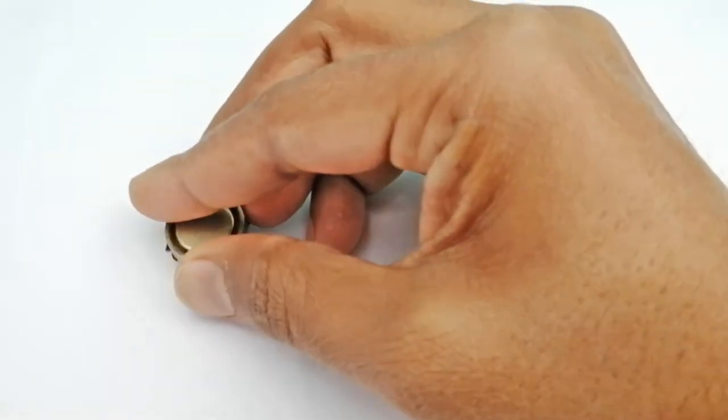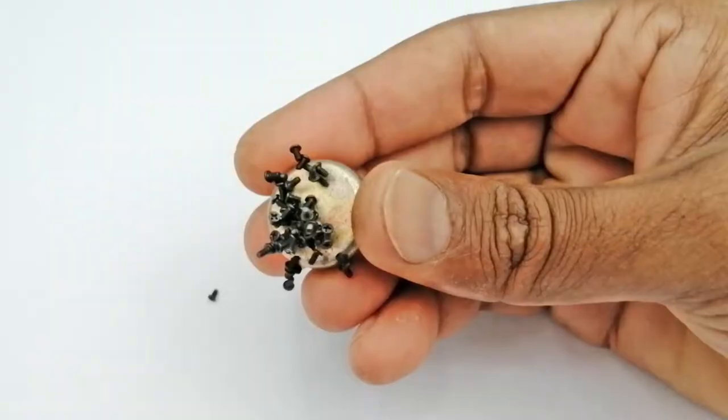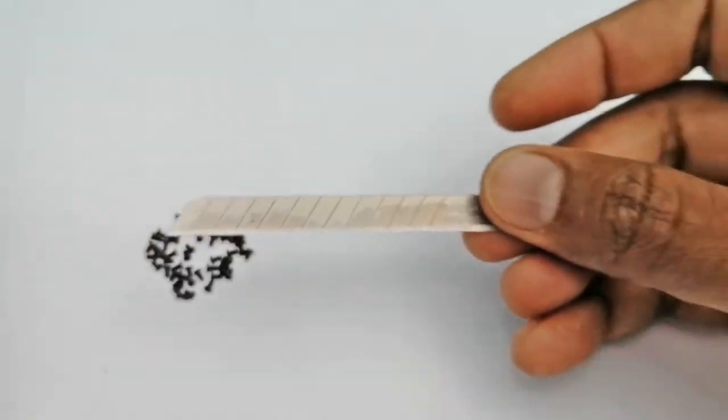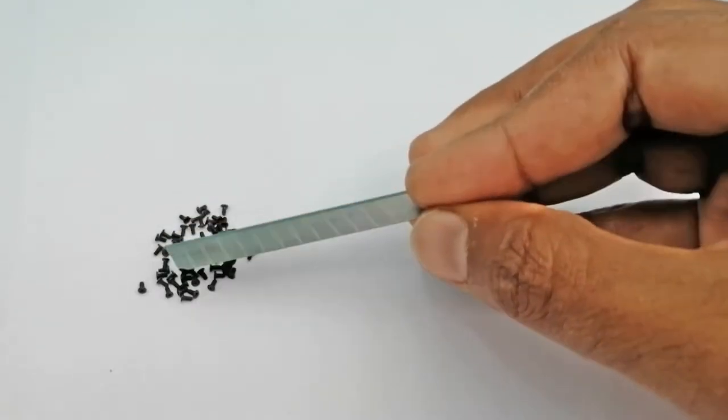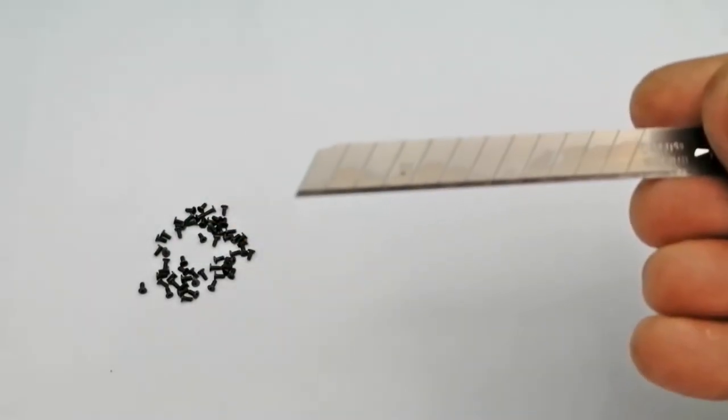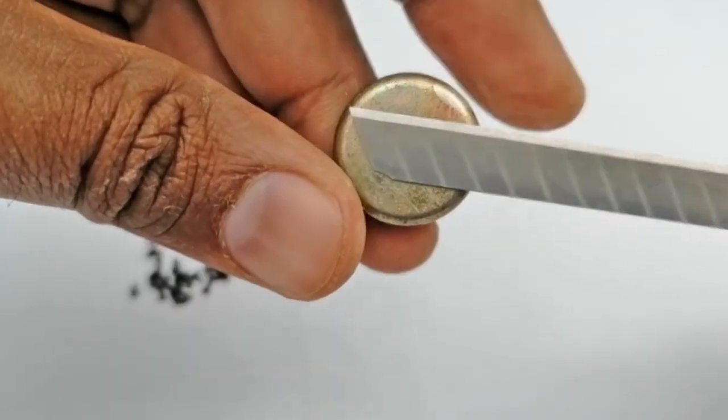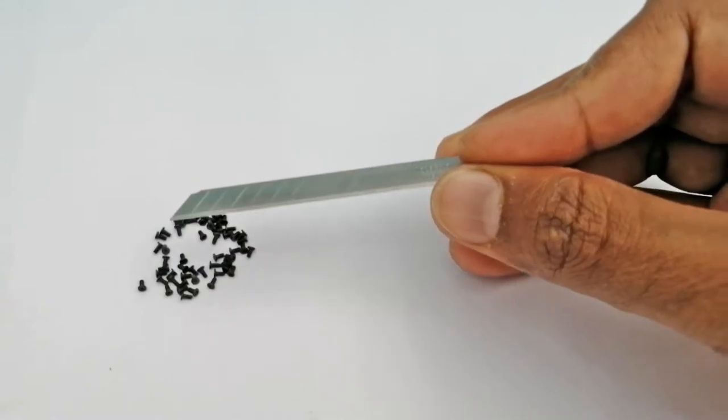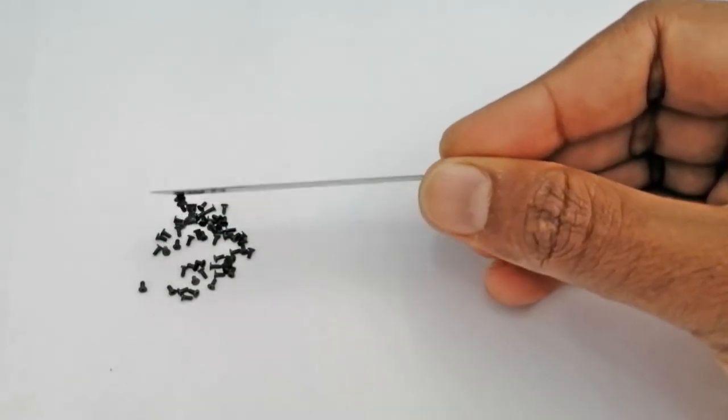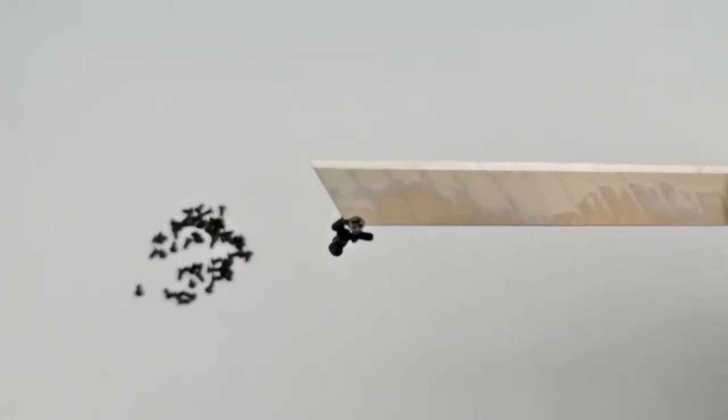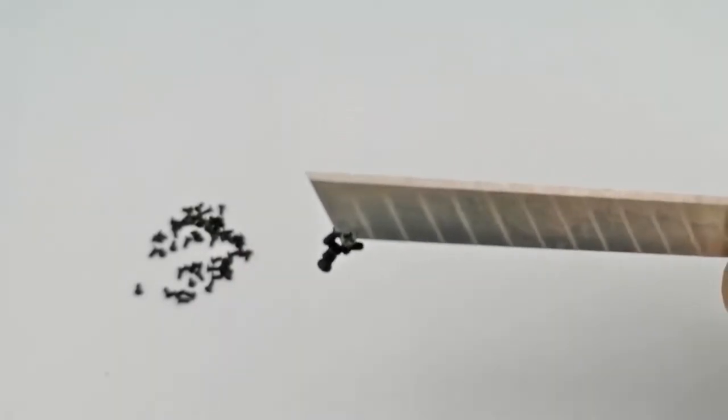We all know that a magnet attracts magnetic material like iron permanently. As you can see, we have an iron blade. It has no magnetic properties and does not attract. We attach this iron blade to a permanent magnet once and see what happens. As soon as we put it close to the iron nails, it attracted them. That means the magnetic properties have come into this blade as well.